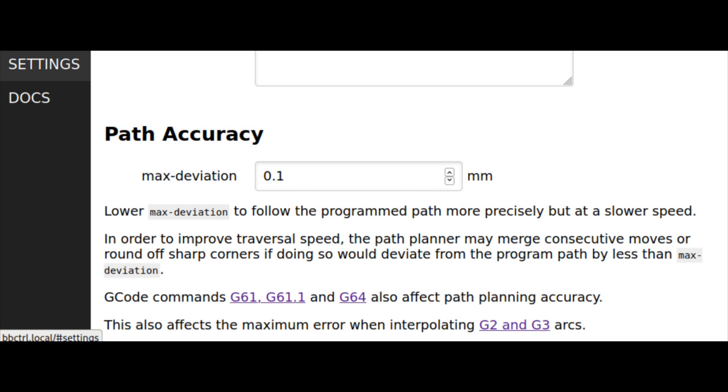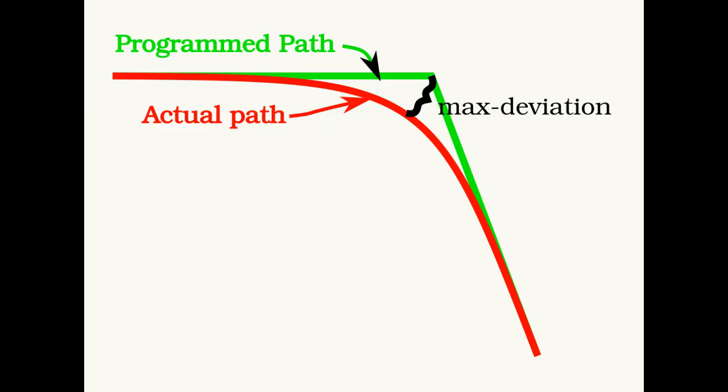Overall cutting time can also be affected by the max deviation parameter on the Settings General page. Max deviation specifies how far the controller is allowed to deviate from the programmed path. Deviating from the programmed path allows the controller to go around corners without coming to a complete stop. Lower values of max deviation result in more accurate cuts, while larger values reduce cutting time.